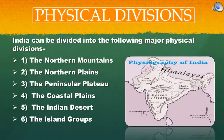India can be divided into the following major physical divisions: the northern mountains, the northern plains, the peninsular plateau, the coastal plains, the Indian desert, and the island groups.